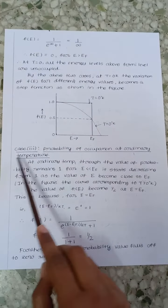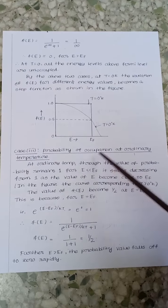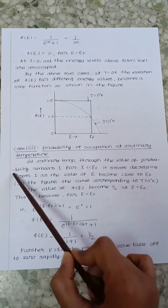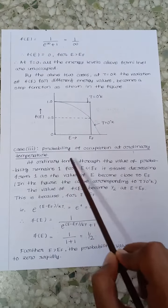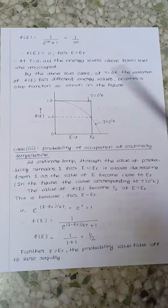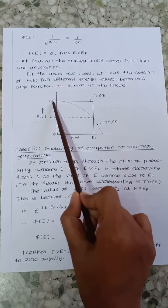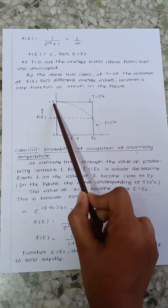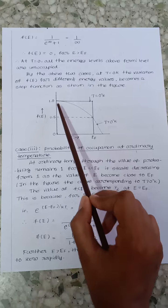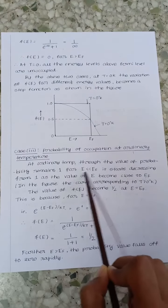So here case 3 is probability of occupation at ordinary temperature. That means at ordinary temperature the value of probability remains 1 for energy less than Fermi energy.